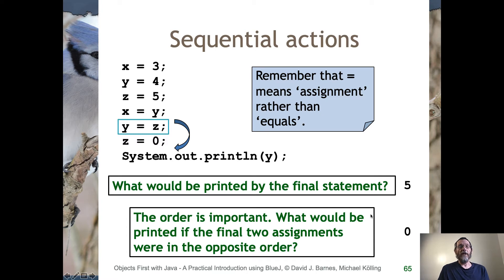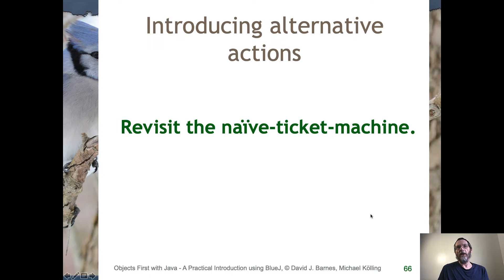Now we want to think about alternative actions — Java's if statement, conditional decision making. To do that, let's revisit the naive ticket machine and expose some of its flaws and inadequacies, because we can then fix those inadequacies by making use of Java's if statement.